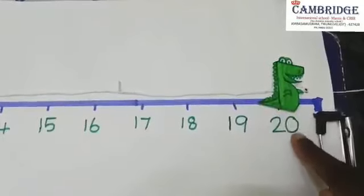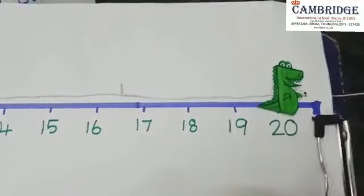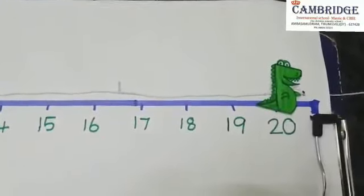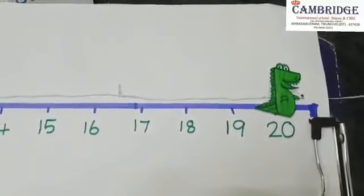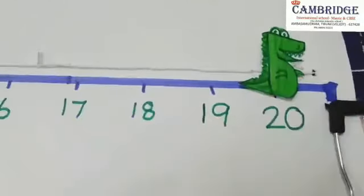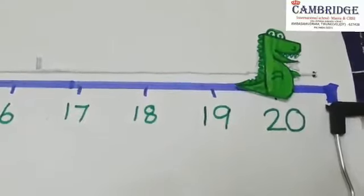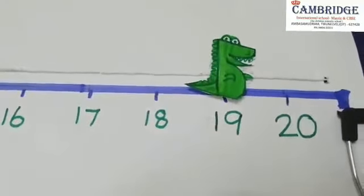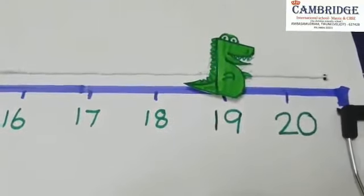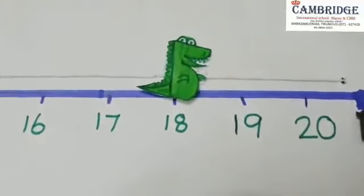Now this alligator stands on number 20. It moves backward to show before number. Which number comes before 20? 19.